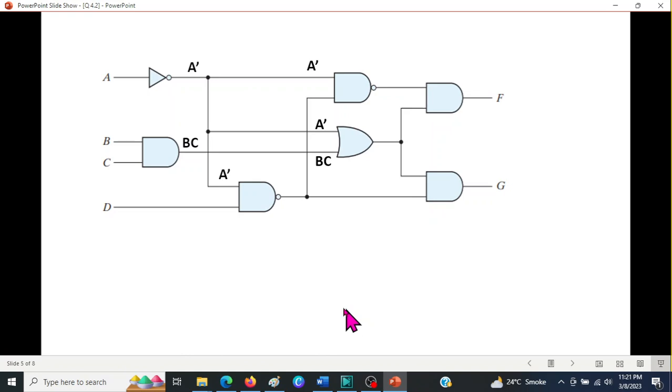Now the third one here has an input A' and D. This is a NAND gate. The best way to understand is that you first consider the AND portion and then the inverted portion. So we write A'D, then we invert it. So this is the output here. Now this output is going to this point and up.